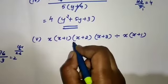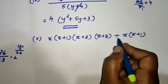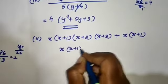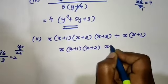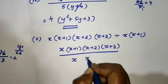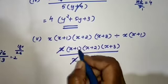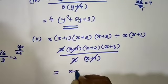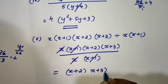Next: x into x plus 1 into x plus 2 into x plus 3, divided by x into x plus 1. X and x can be cancelled, x plus 1 and x plus 1 can be cancelled. So the remaining answer is x plus 2 into x plus 3.